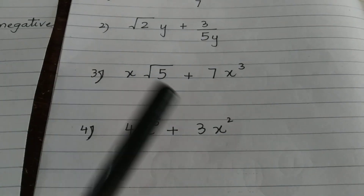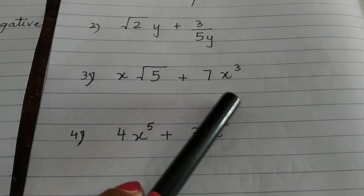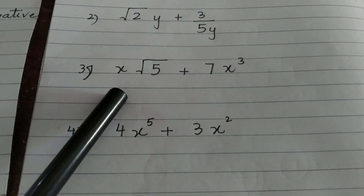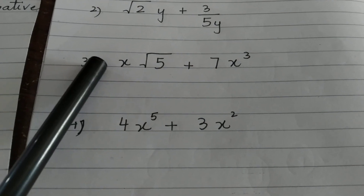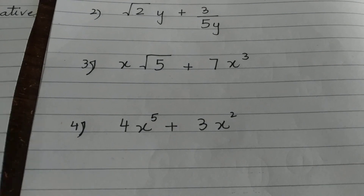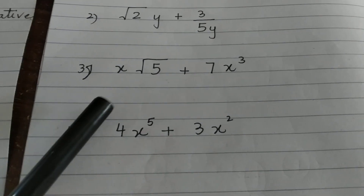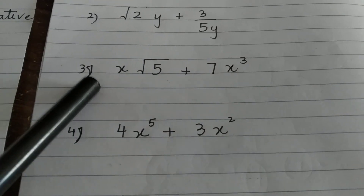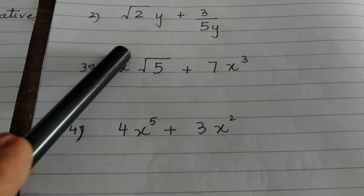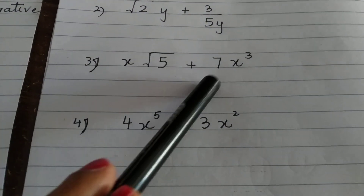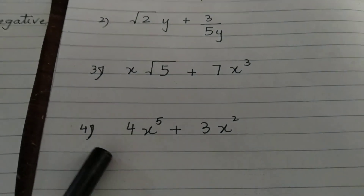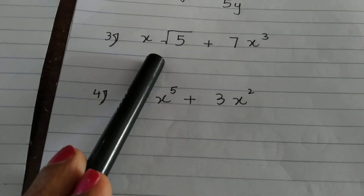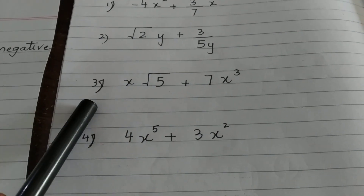The third expression is x to the power 1/3 plus 7x cubed. Checking the exponents: the first term has x to the power 1/3, and the second has x to the power 3. The exponent 3 is positive and not fractional, but 1/3 is a fractional exponent. Since the second condition requires the exponent to be an integer with no fractional part, and 1/3 is fractional, this is a non-polynomial expression.